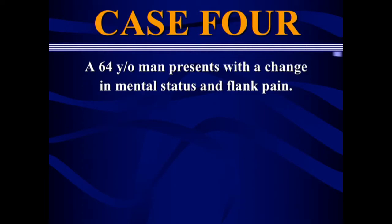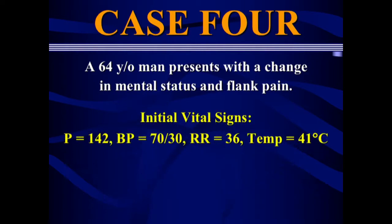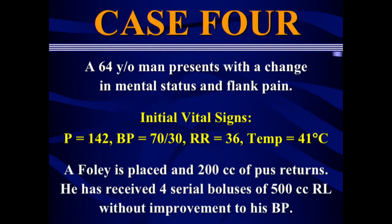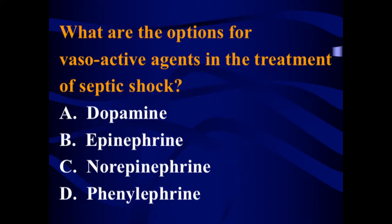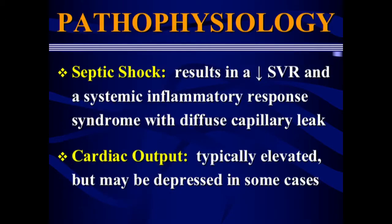Case four: a 64-year-old man presents with change in mental status and flank pain. Vital signs: pulse 142, blood pressure 70/30, respiratory rate 36, temperature 41. A foley is placed and about 200 cc's of frank pus returns. He's received four 500 cc boluses of Ringer's lactate without improvement in blood pressure. Options for vasoactive agents in septic shock: in Germany they would choose epinephrine, but in the U.S. we're going to go with levophed.